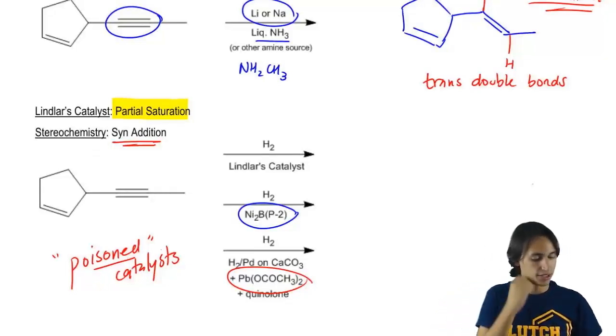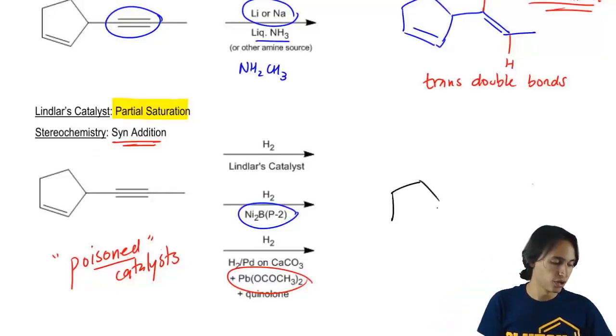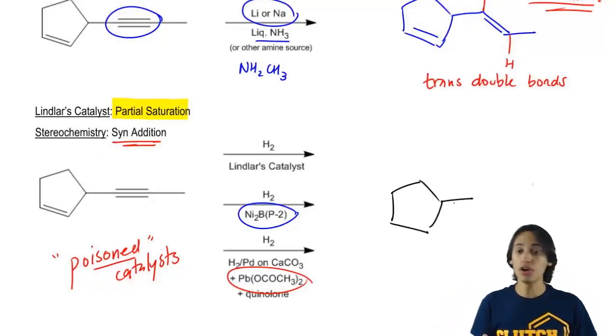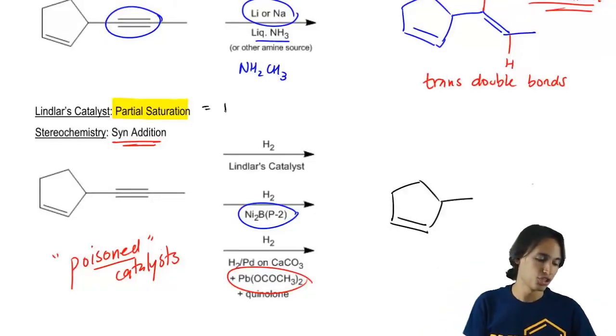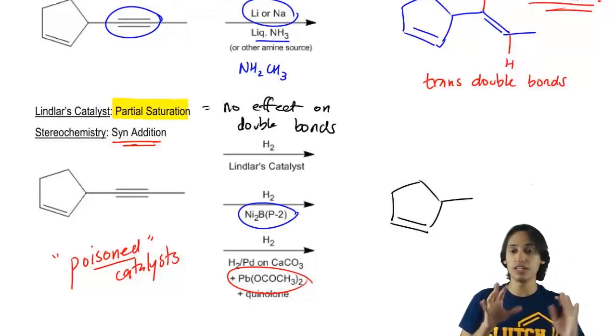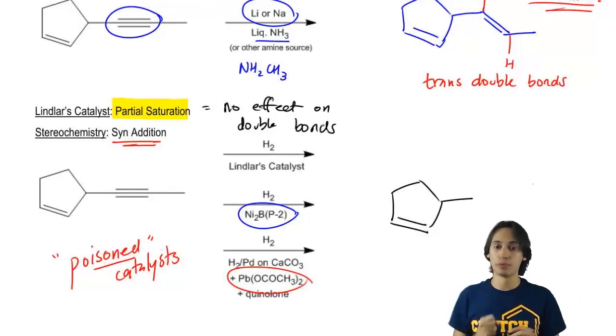So now let's finally get into the products. What should I draw for my product? Well, what I should draw is that I should still keep that double bond, right? Because whenever you have partial saturation, that means you're going to have no effect on double bonds. That means the only difference, the only thing that I'm really touching here is the triple bond.